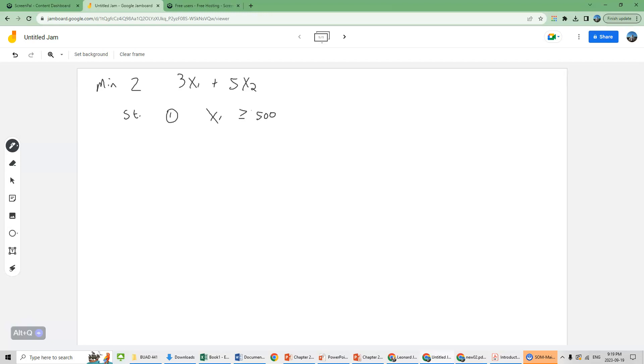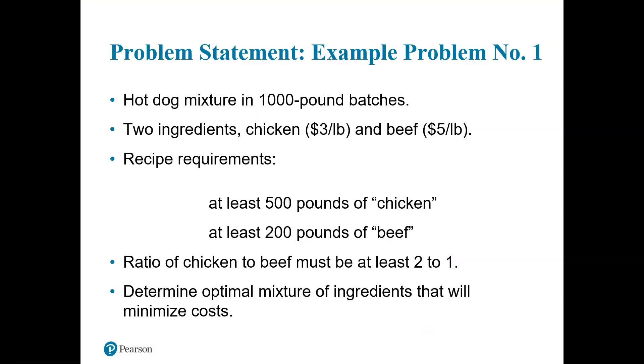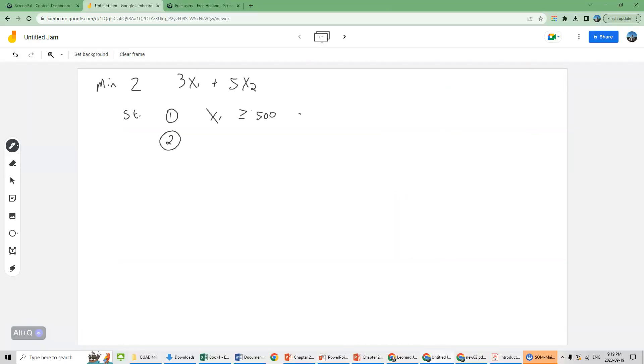Subject to four constraints. We need at least 500 pounds. At least means greater than, equal to, and greater than. 500 pounds of chicken. So this is chicken. And beef we need at least 200 pounds. Third constraint is that we make these two products in batches. We want to make exactly 1,000 pounds. It is possible to have any constraint that has an equal sign. So the sum of our chicken and beef products we're creating have to equal 1,000 pounds.